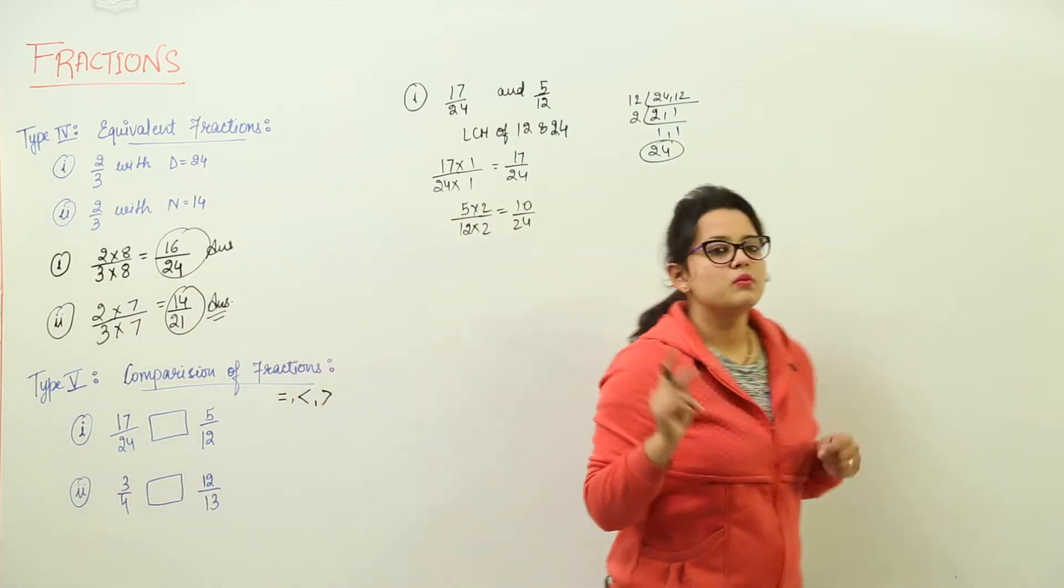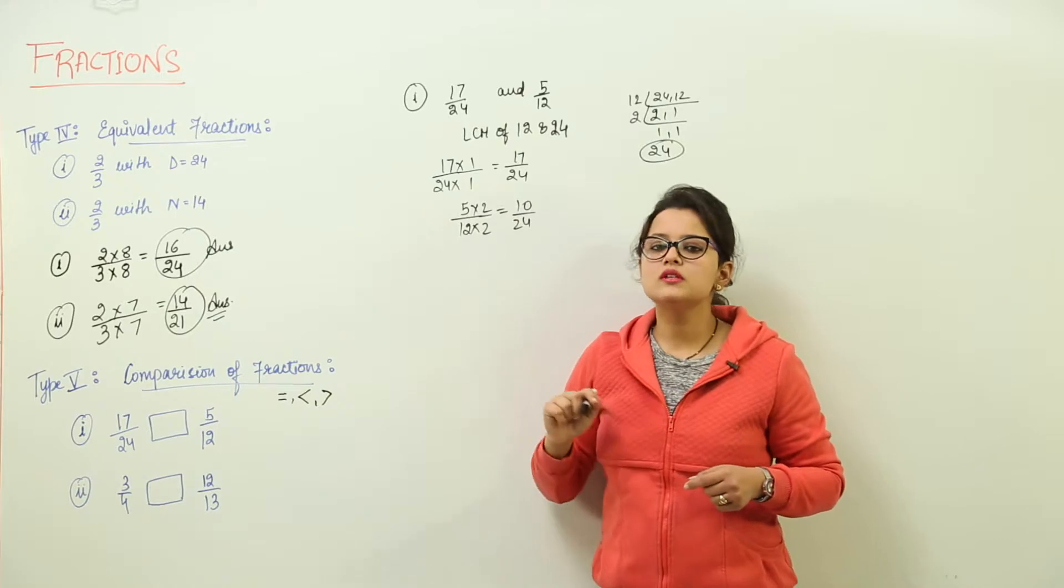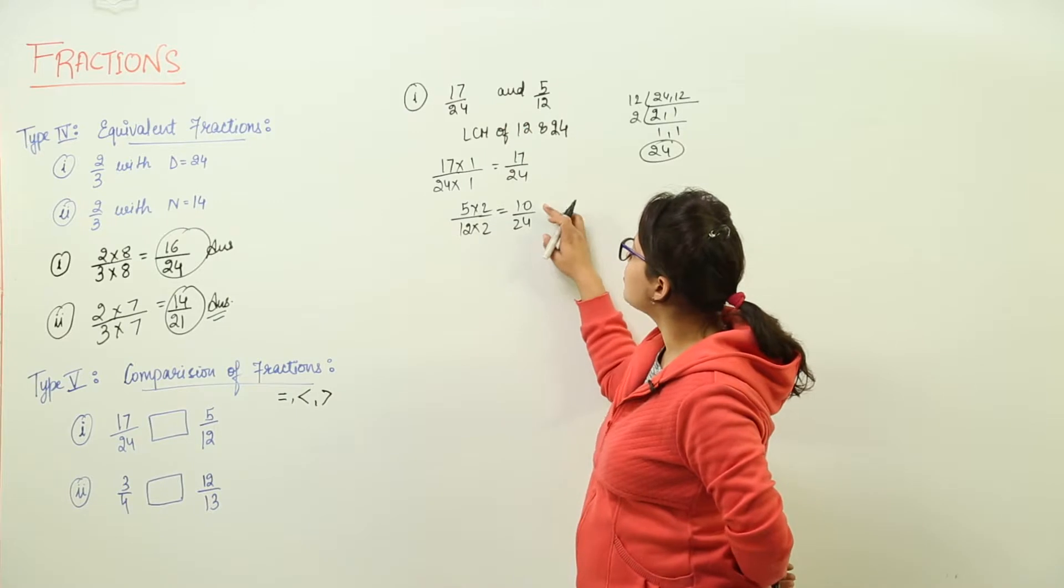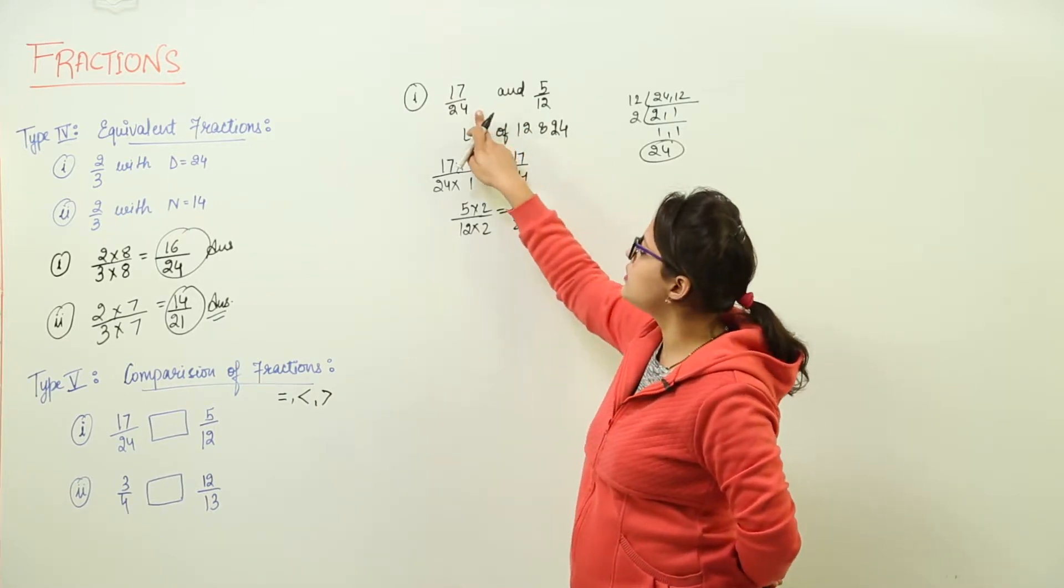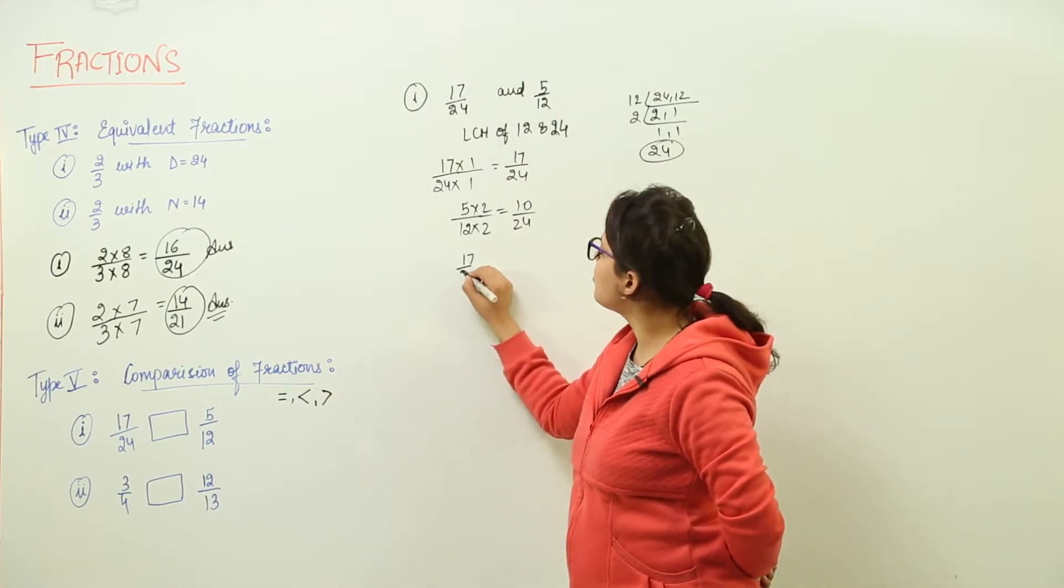Now because we have got both the fractions having the same denominators, we can compare their numerators. The numerator of 17 upon 24 is greater than the numerator of 10 upon 24. Now originally these fractions were 17 upon 24 and 5 upon 12. So we write 17 upon 24.